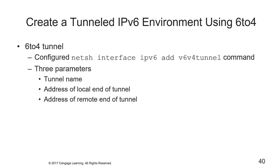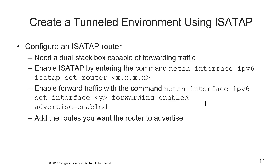To create a tunneled IPv6 environment using 6to4, you configure the NetShell interface using the 'ipv6 add v6v4tunnel' command with three parameters: the tunnel name, the address of the local end of the tunnel, and the address of the remote end of the tunnel. To configure an ISATAP router, you'll need a dual-stack box capable of forwarding traffic. Enable ISATAP by entering the command 'netsh interface ipv6 isatap set router' followed by the IP address of the router, then enable traffic forwarding.